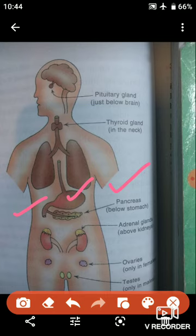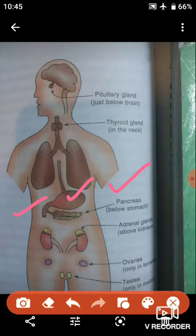Next are the adrenal glands. The adrenal glands are also endocrine glands. In our body, there are two adrenal glands, located on top of the two kidneys. These adrenal glands produce the hormone called adrenalin.